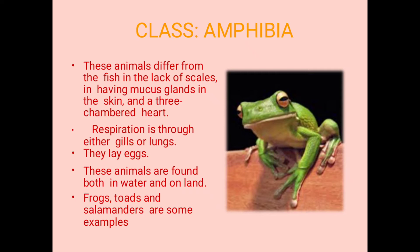Respiration is through either gills or lungs — they have both. If they need to breathe in water, they use gills, and on land they use lungs for the respiration process. They also lay eggs. These animals are present both in water and on land. Examples are frogs, toads, and salamanders. This was class Amphibia.